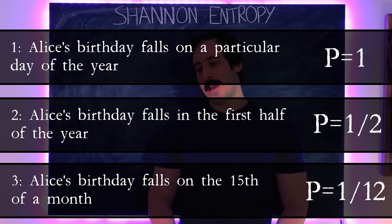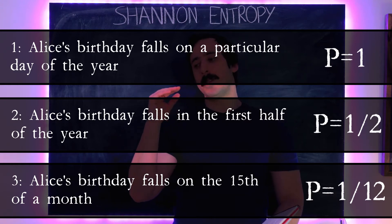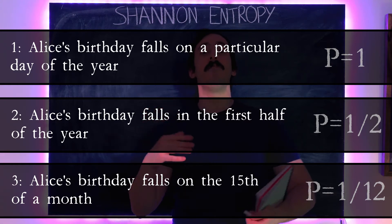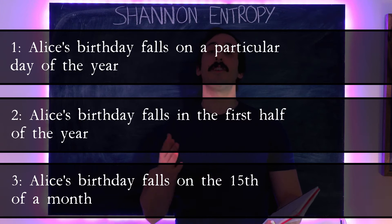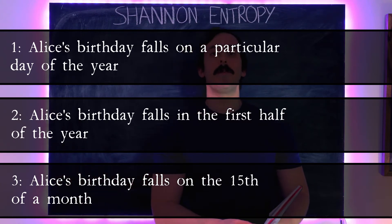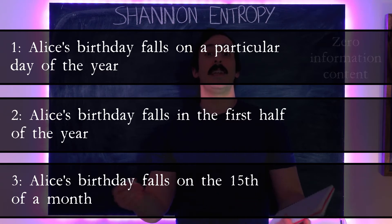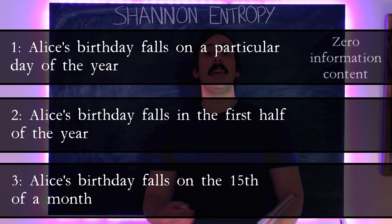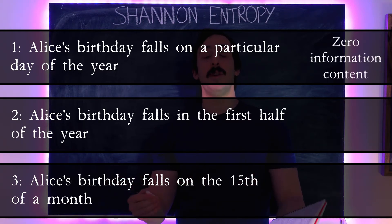It's also clear that each statement has a different amount of information content — we learn a different amount from each. The information content of statement one, that Alice was born on a particular day of the year, is zero. We don't learn anything new from hearing that statement.